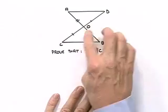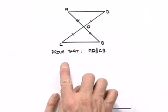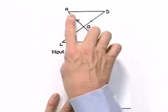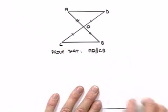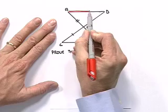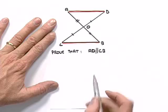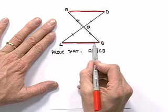Let's do another similar problem. Once again we've been given a diagram with certain properties shown on it and we've been asked to prove that the line AD is parallel to the line CB. We want to prove that this line is parallel to that line.